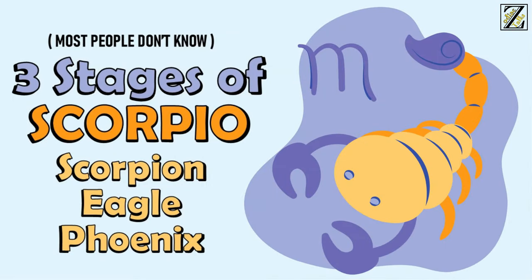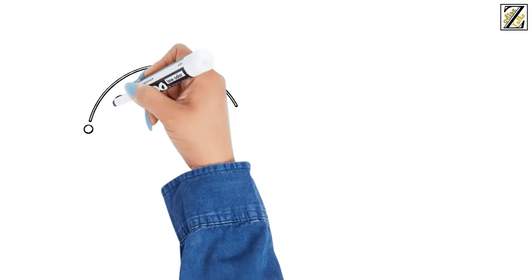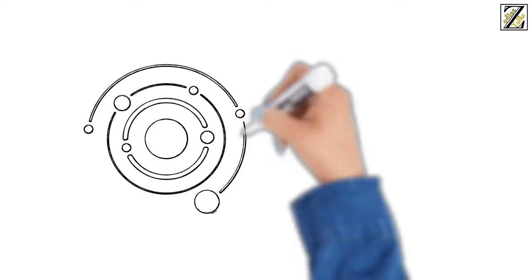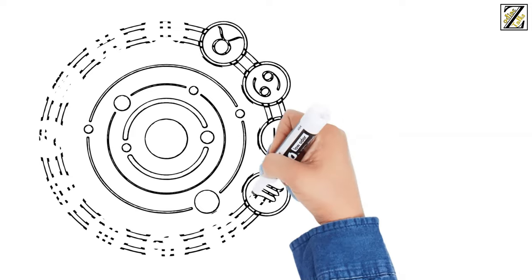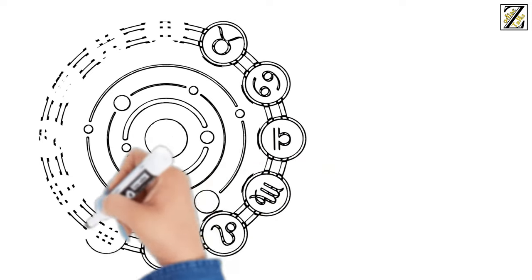The Three Stages of Scorpio. Every zodiac sign has three evolutionary stages. We all start off as the first stage of the sign's evolution, and these basic forms are representative of all the twelve signs.